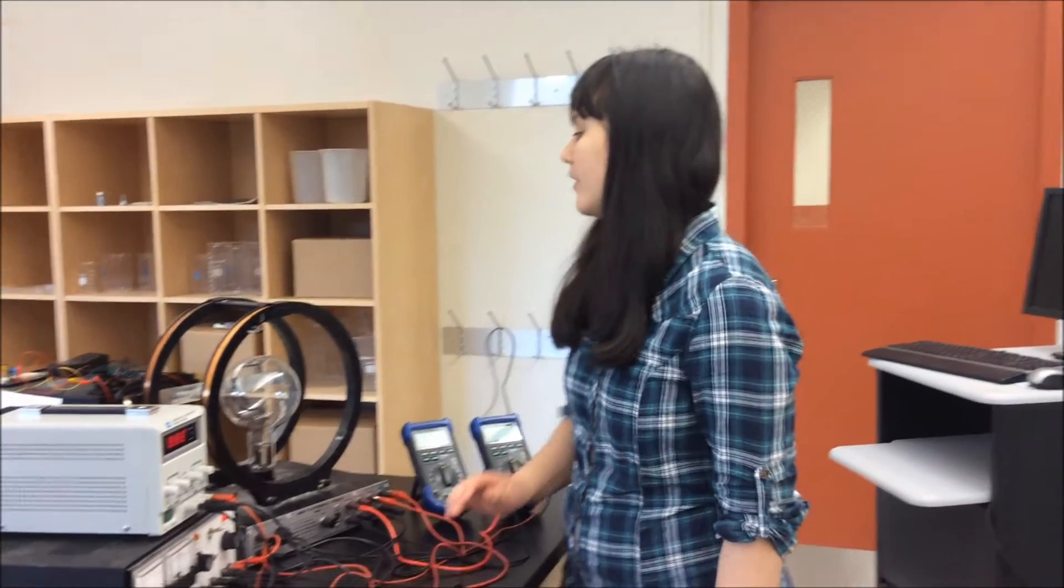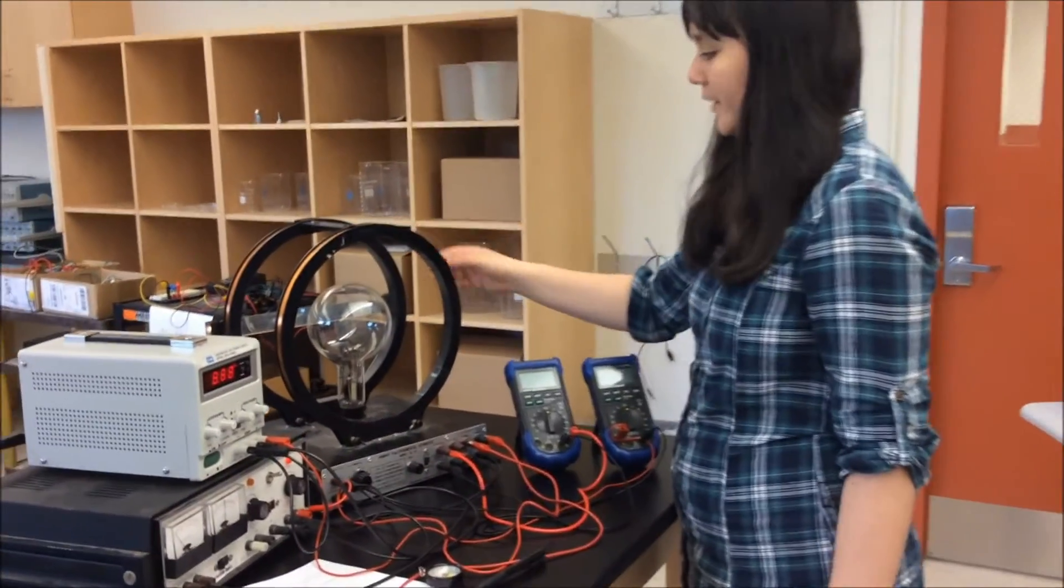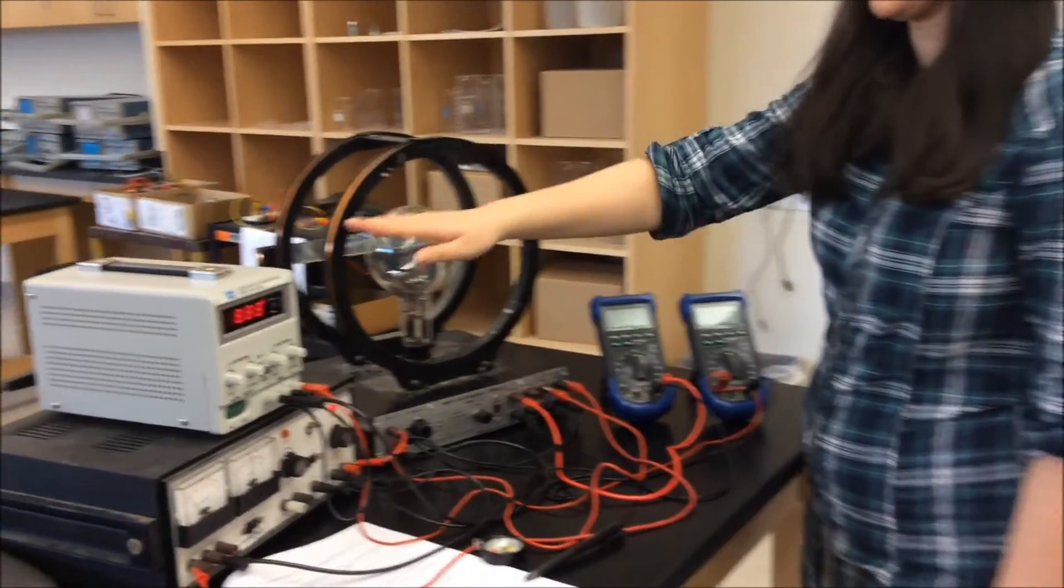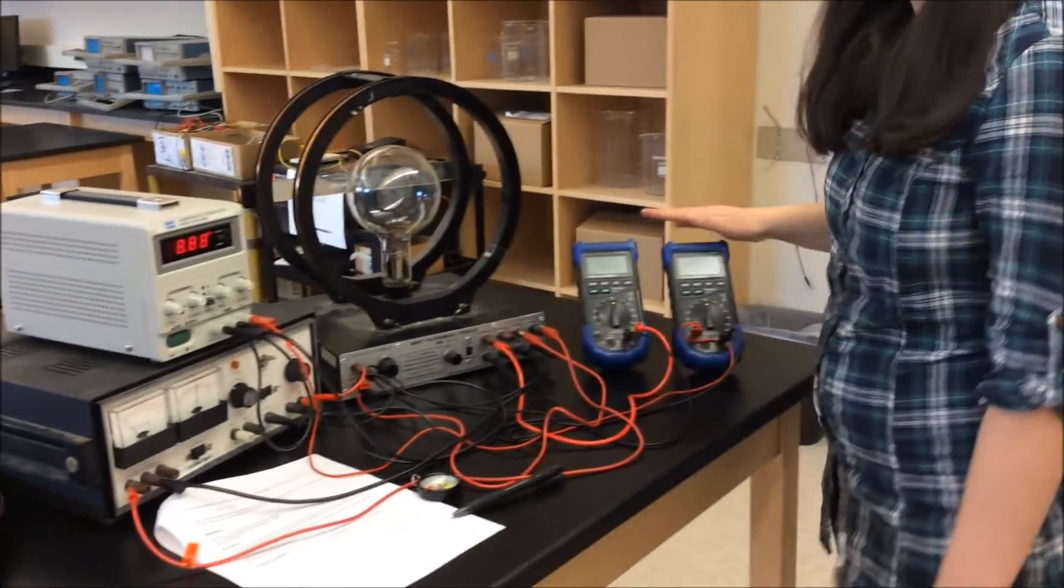The equipment that you need for this experiment are the Helmholtz coils and the cathode ray tube, the power supply, and a voltmeter and an ammeter.